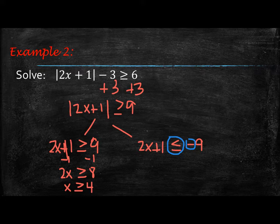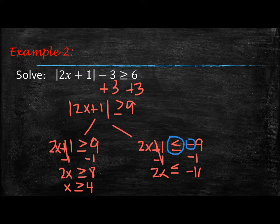Over here on the right side, when we subtract 1 we get 2x less than or equal to negative 10, and when we divide by 2 we get x is less than or equal to negative 5.